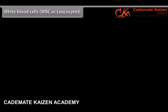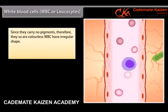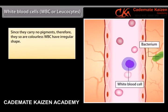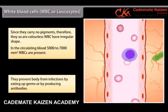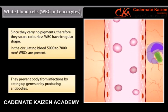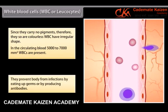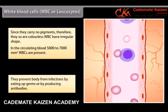White blood cells, WBC or leukocytes, since they carry no pigments, are colorless. WBCs have an irregular shape. In the circulating blood, 5,000 to 7,000 per mm cube WBCs are present. They prevent the body from infections by eating up germs or by producing antibodies.